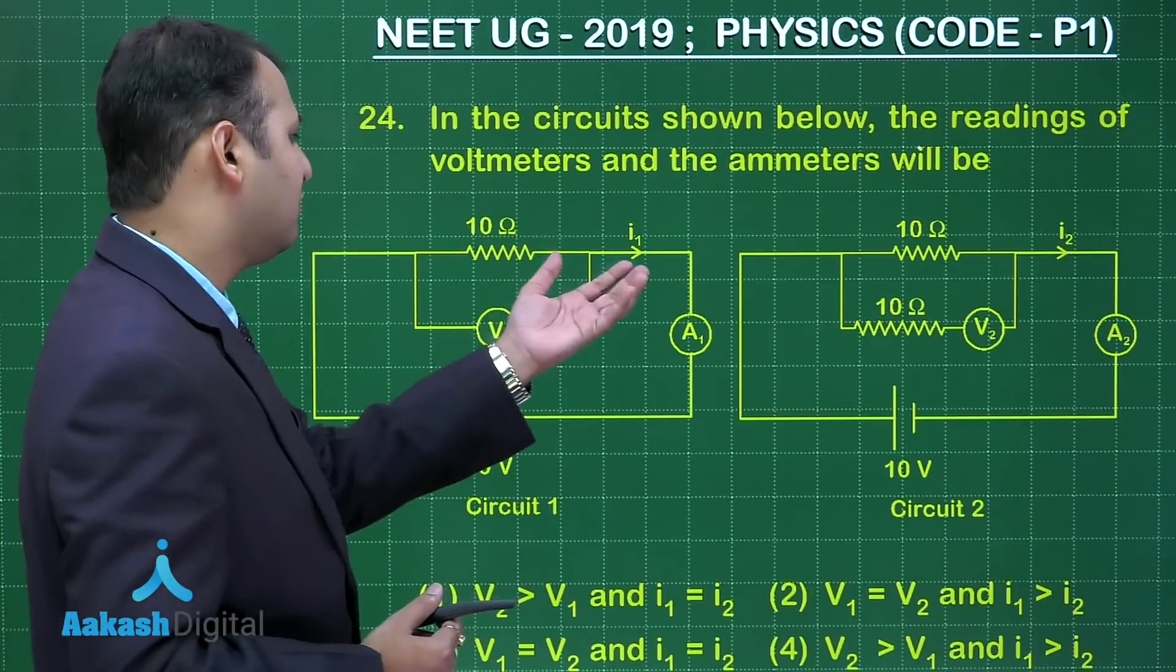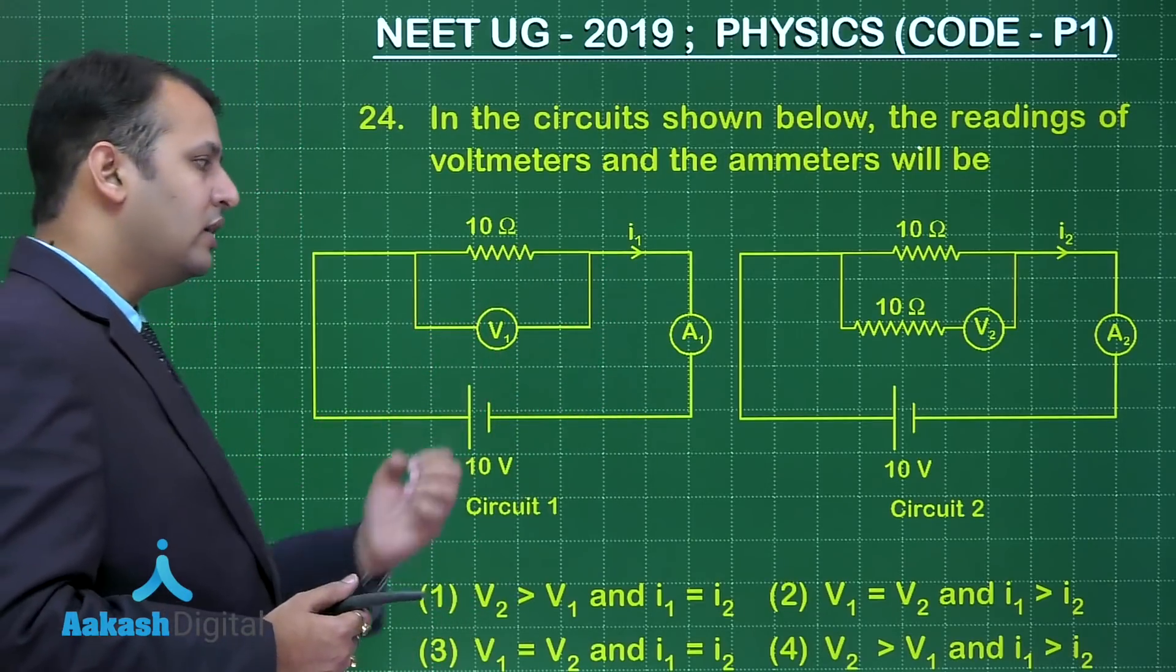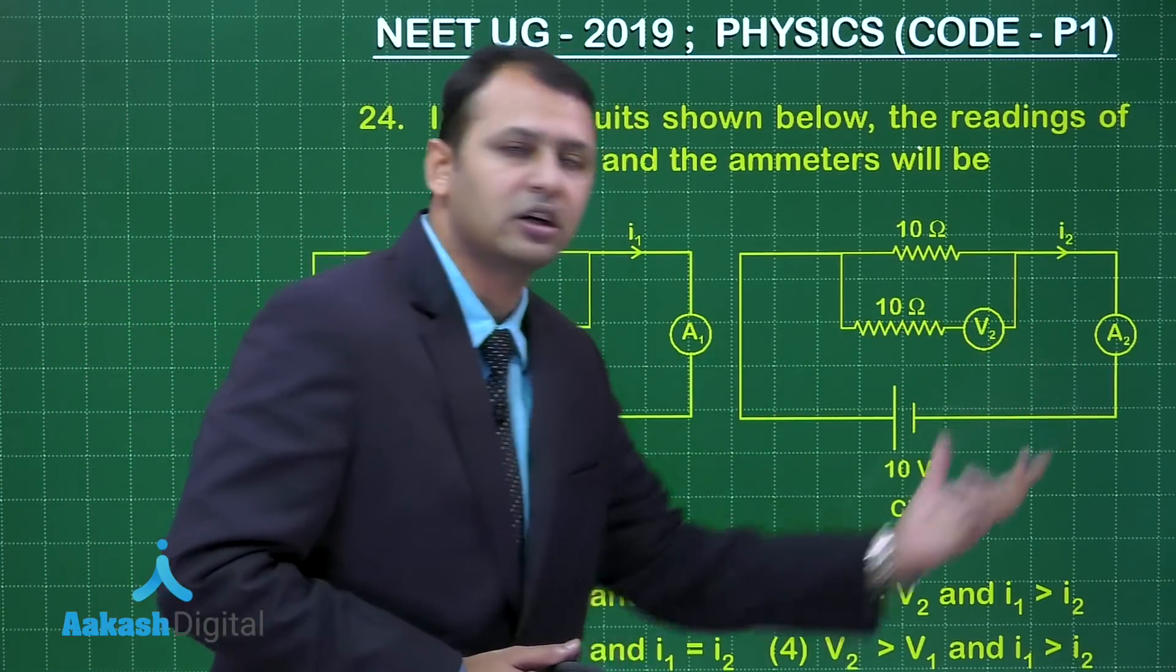Here is I1 which is the current flowing through it and potential measured is V1 in this circuit 1. In the second case, this is V2 which is potential measured here and I2 is the current flowing through it.